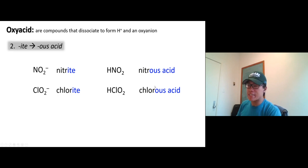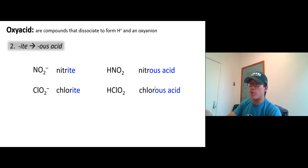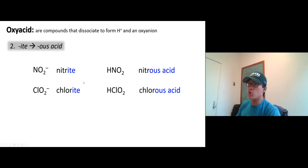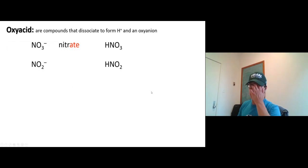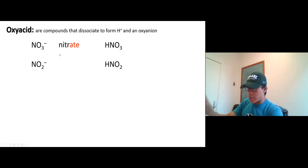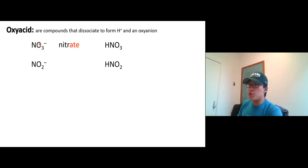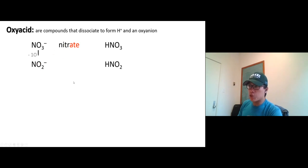If you know the main memorized forms, you can derive the rest. Nitrate is the base; going to a lower number of oxygens gives you nitrite. Nitrate as an acid is nitric acid, and the lower-oxygen version as an acid is nitrous acid. You can go via the anion route (nitrate → nitrite → nitrous acid) or directly — whichever you're comfortable with.